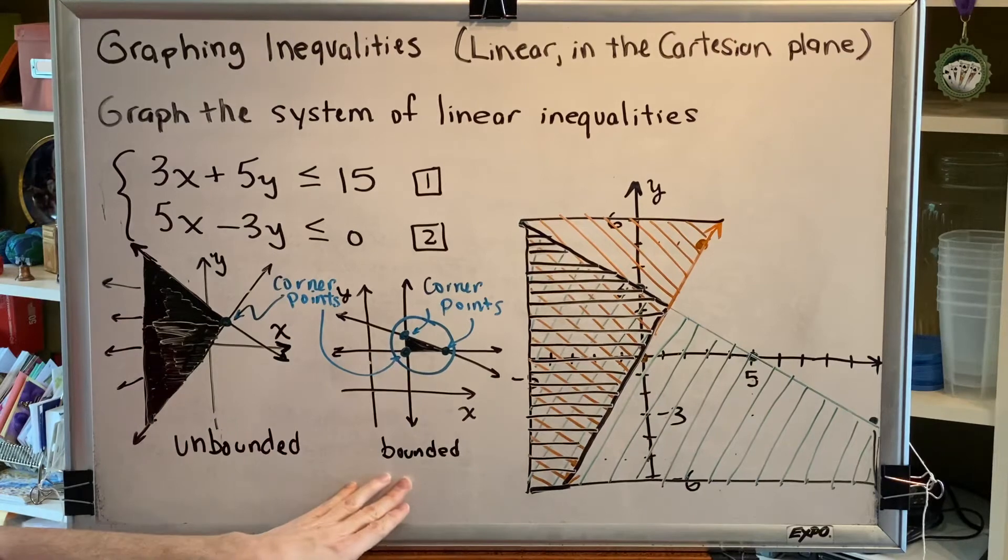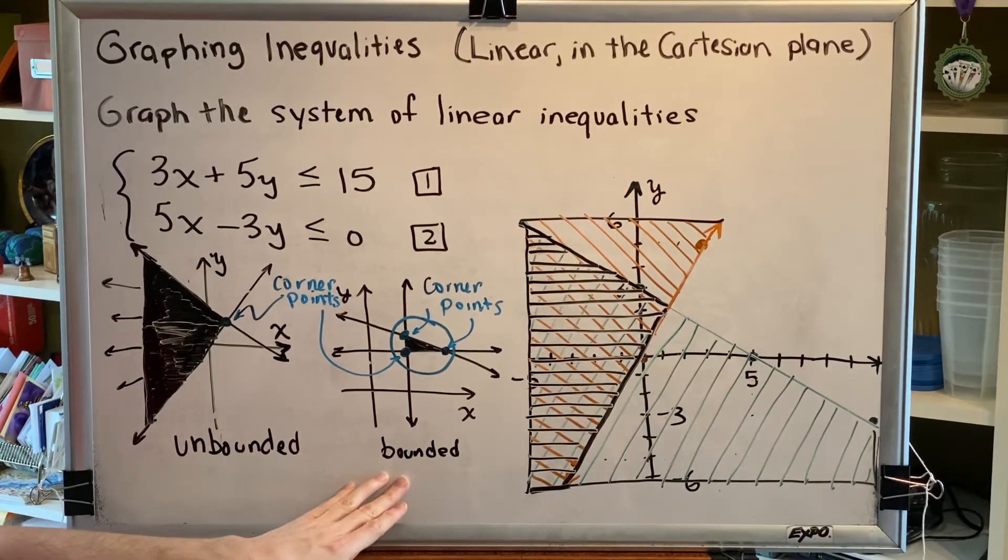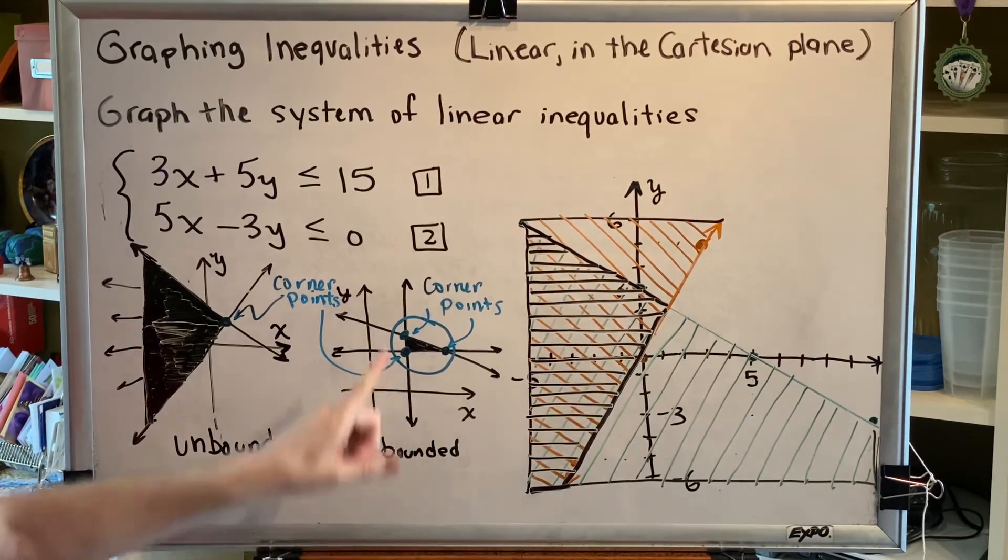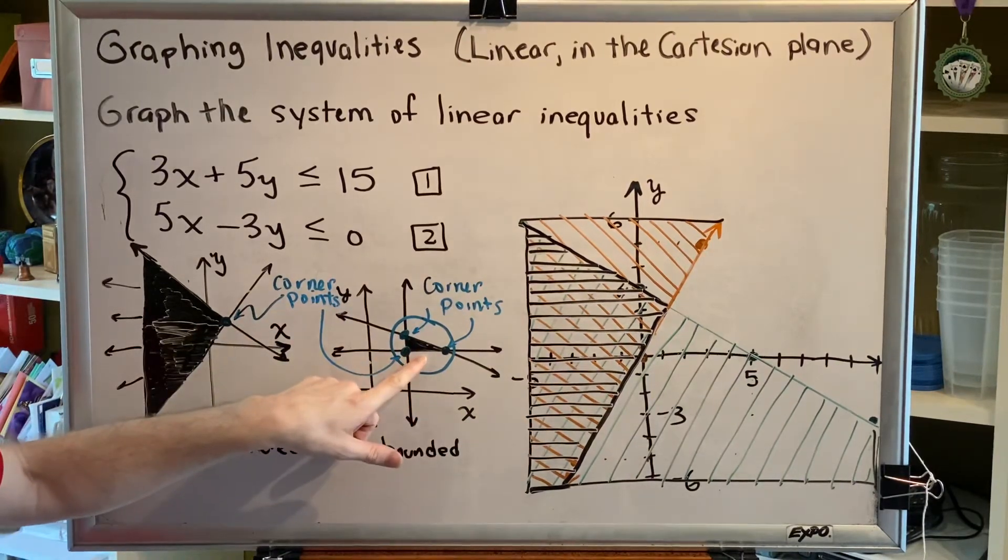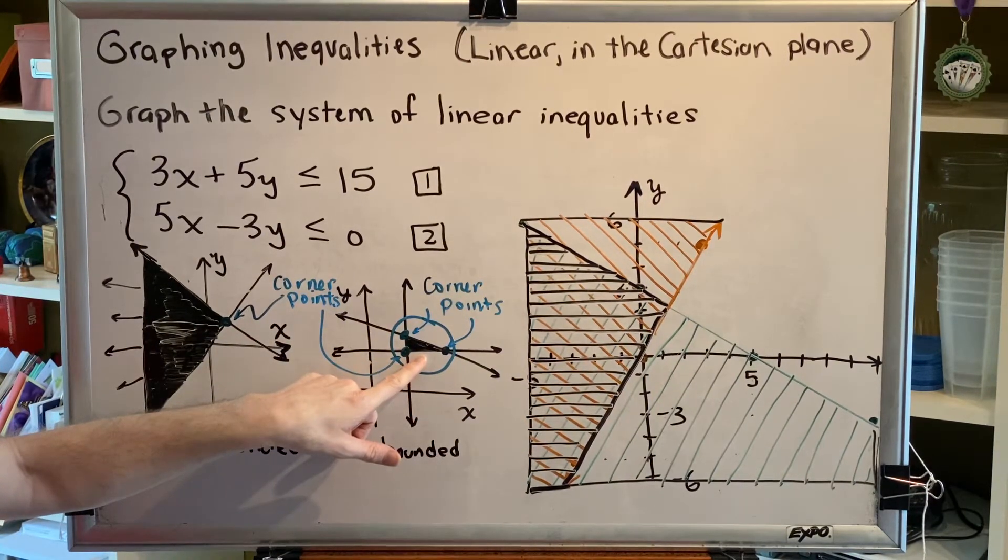All right, now compare that to a problem here where I have drawn three lines. I've got a vertical line, a horizontal line, and a slanted line, and my solution region is this little triangle inside.